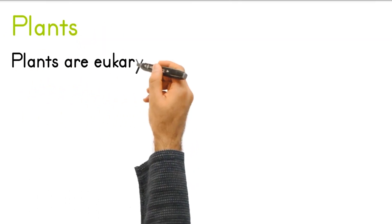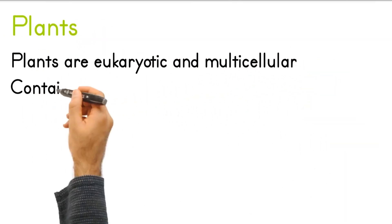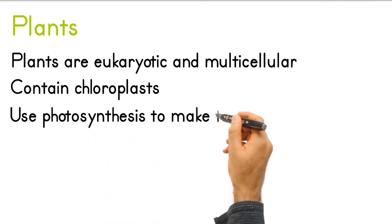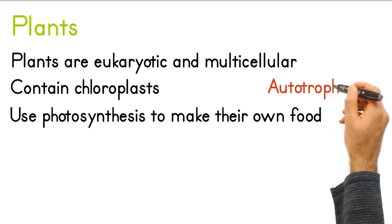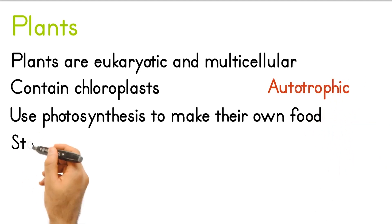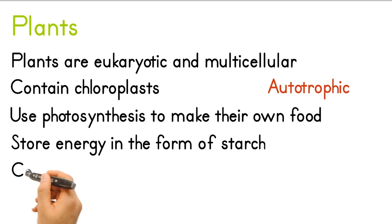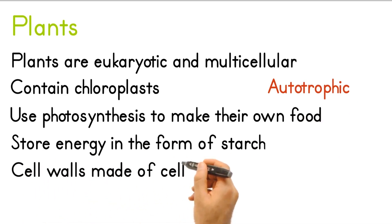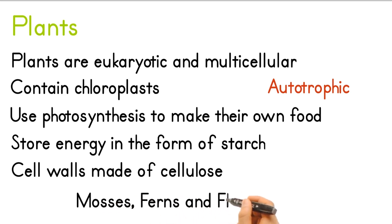Plants are eukaryotic and multicellular. They contain chloroplasts and use photosynthesis to make their own food, which makes plants autotrophic. Plant cells store energy in the form of starch and have cell walls made of cellulose. Examples include mosses, ferns, and flowering plants.